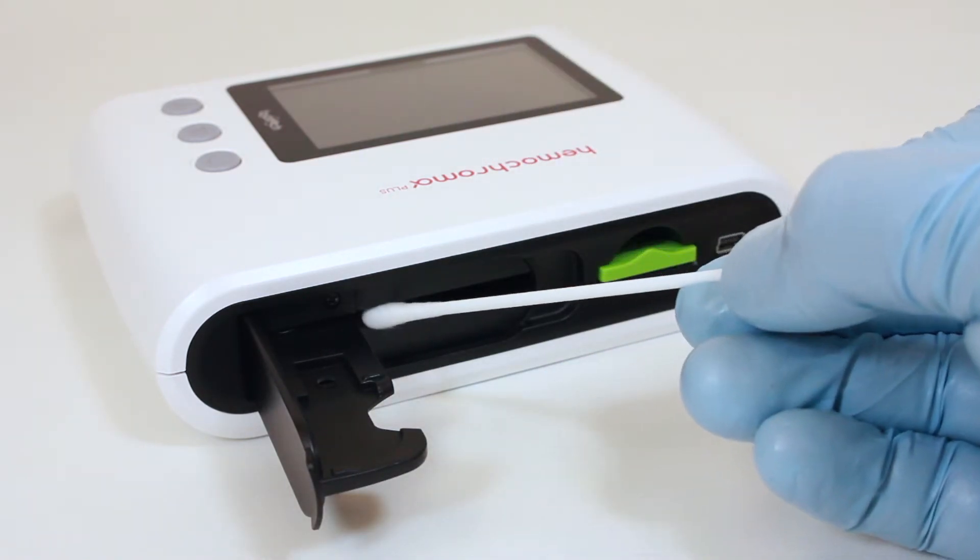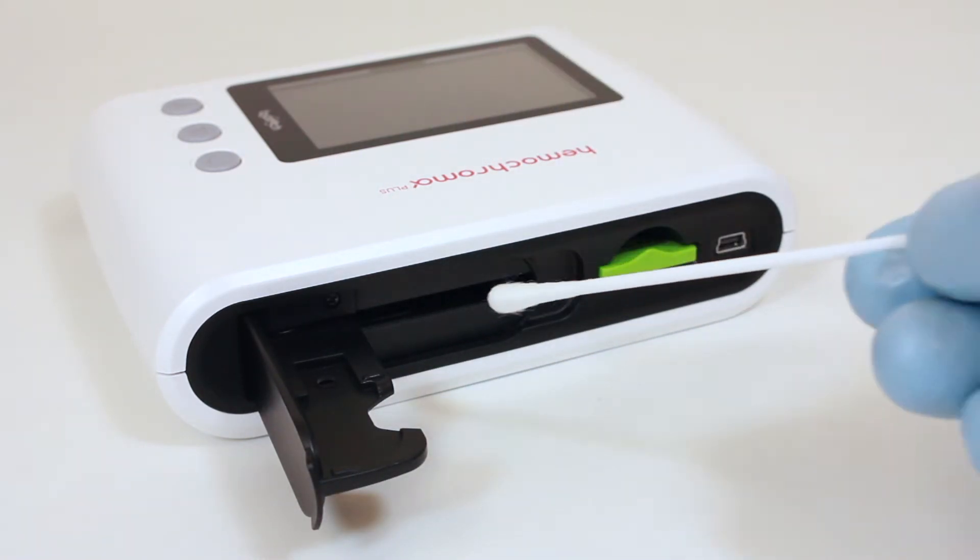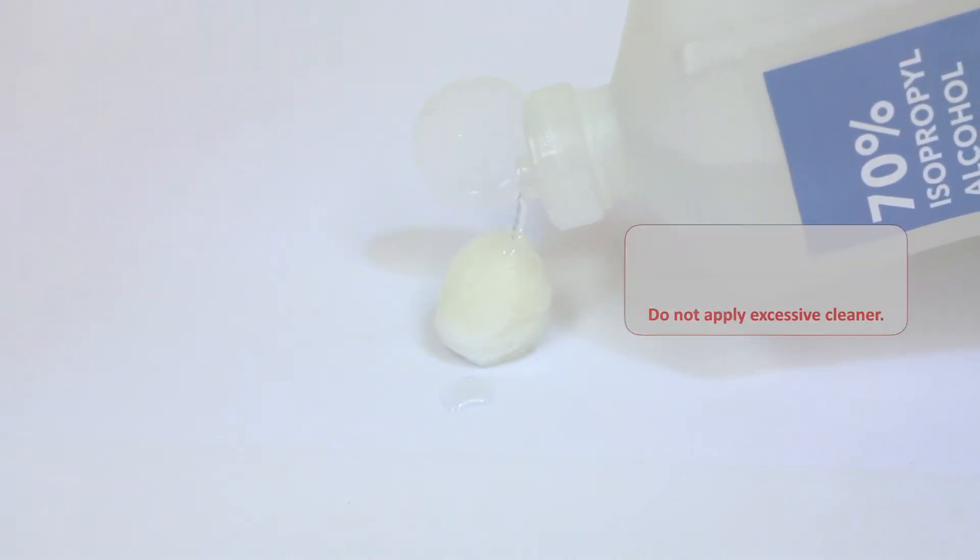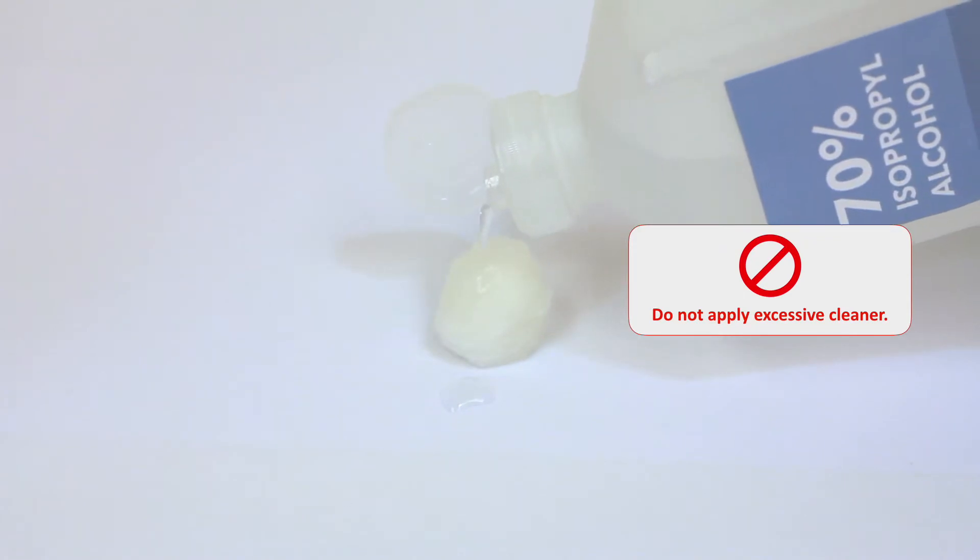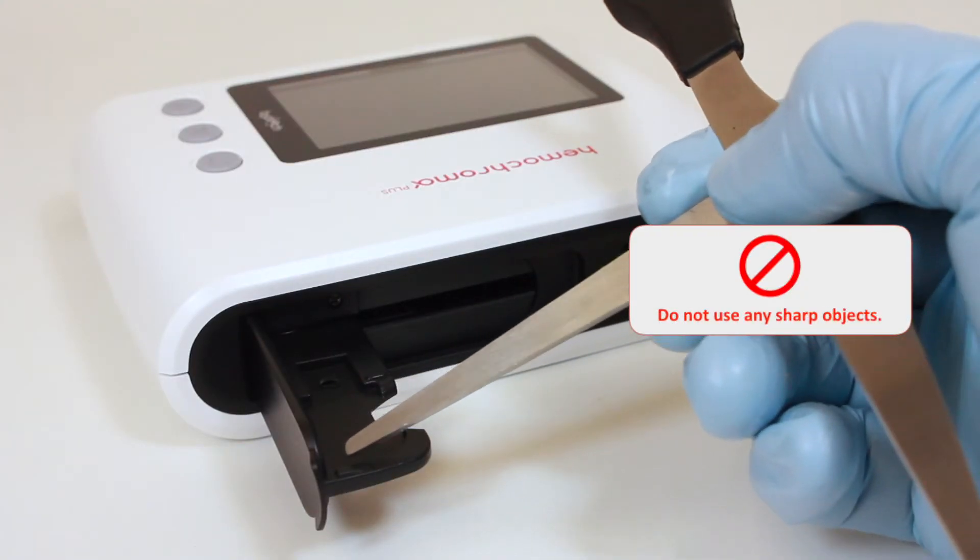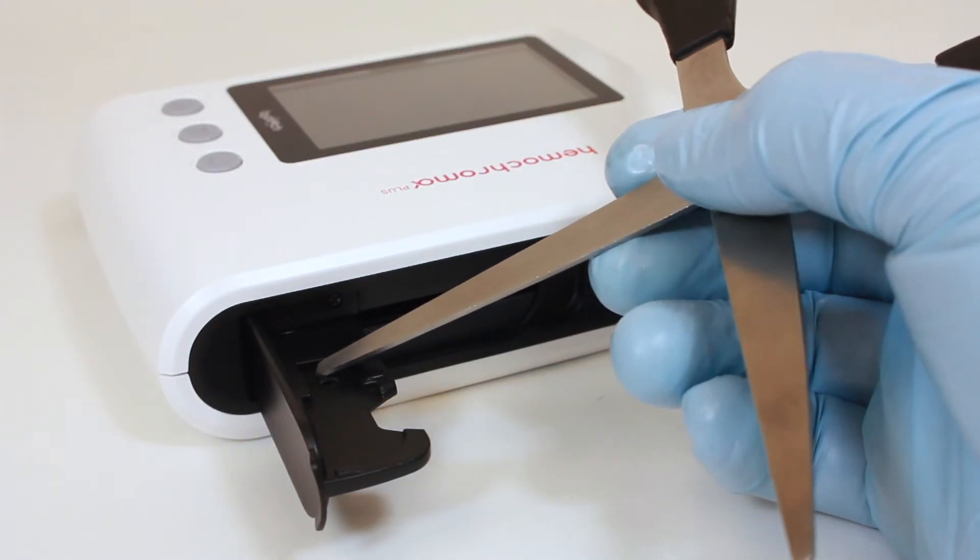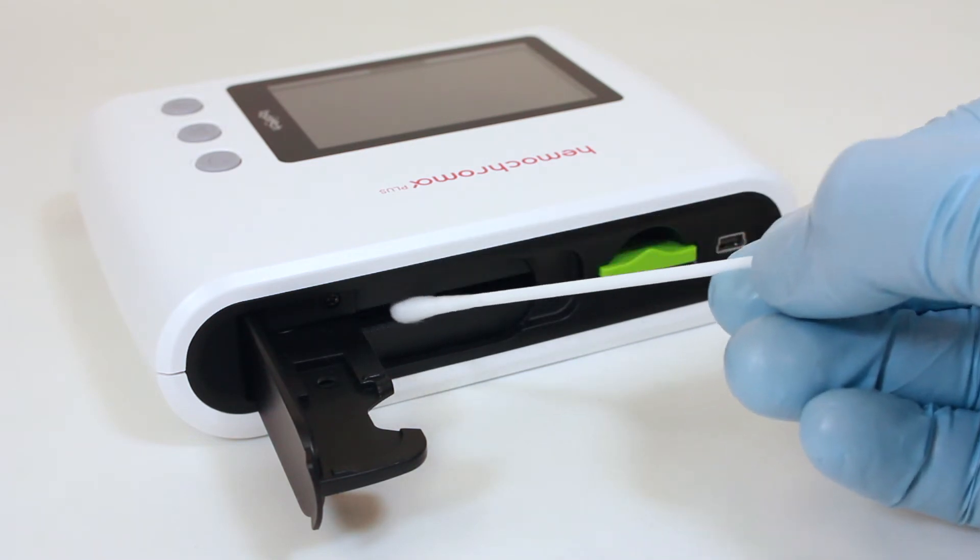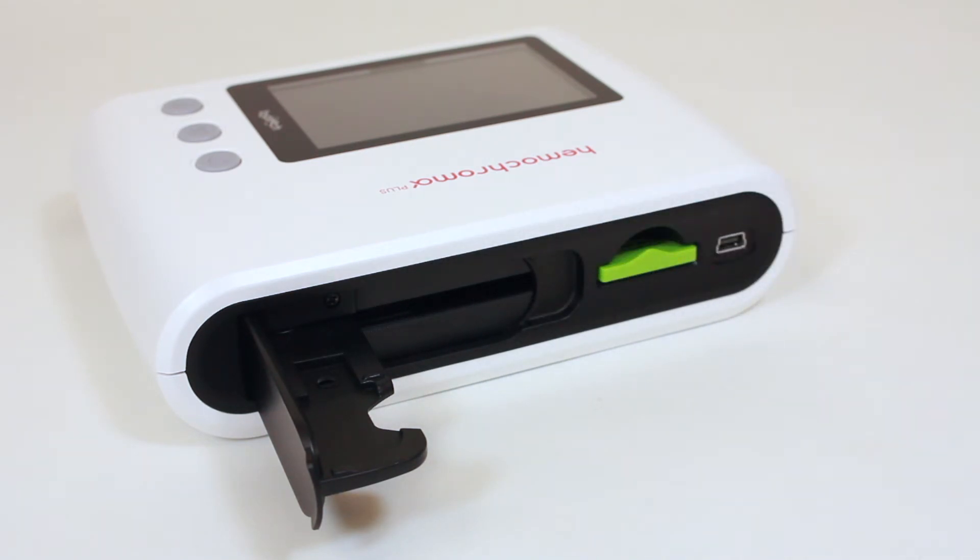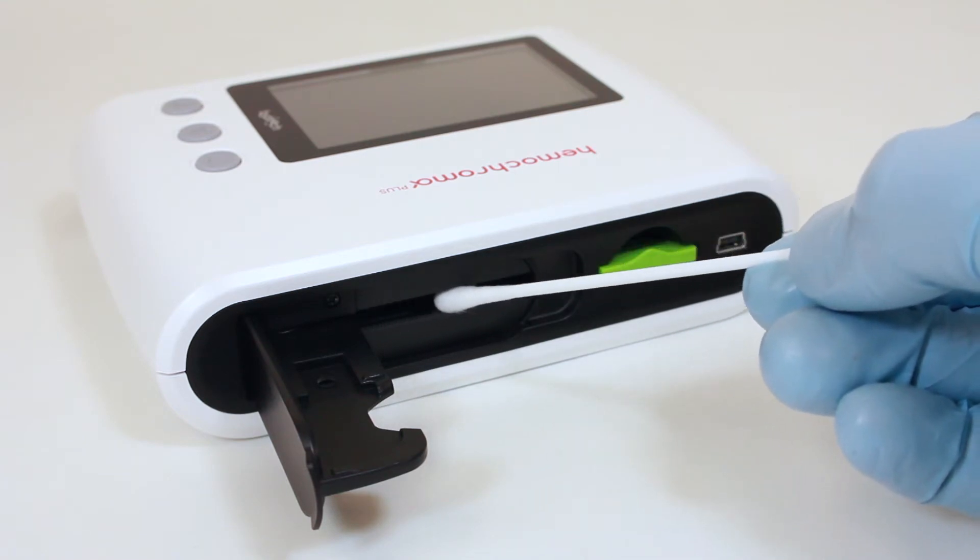Use a cotton swab dampened with 70% rubbing alcohol or mild detergent to clean inside of the sample holder. Do not apply excessive alcohol or mild detergent to the cotton swab. Do not use any sharp objects as a substitute for a cotton swab. Clean the holder and protective glass plate inside the sample reading slot. Repeat the process until no longer necessary.